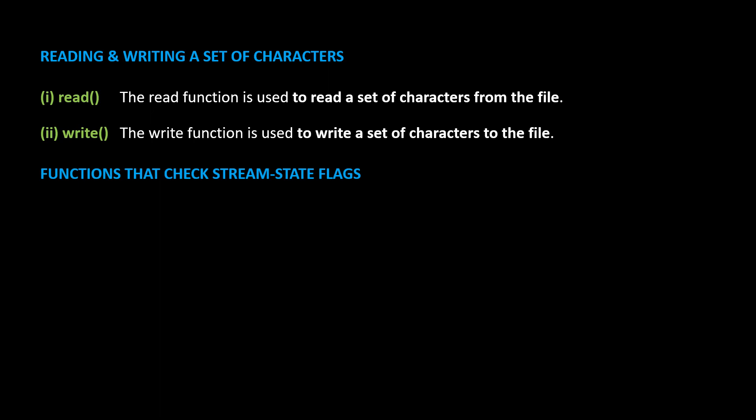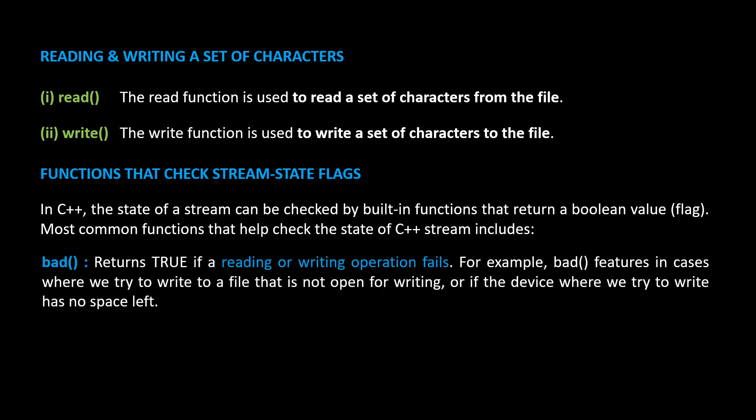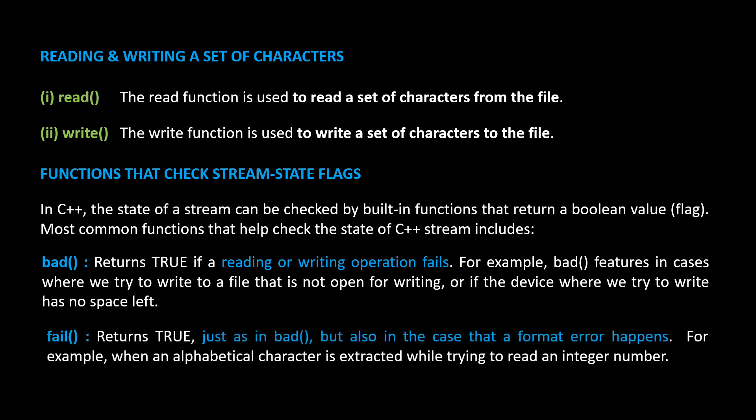Functions that check stream state flags. In C++, the state of a stream can be checked by built-in functions that return a boolean value or a flag. The most common functions include the bad function, which returns true if a reading or writing operation fails — for example, when we try to write to a file that is not open for writing, or if the device where we try to write has no space left.